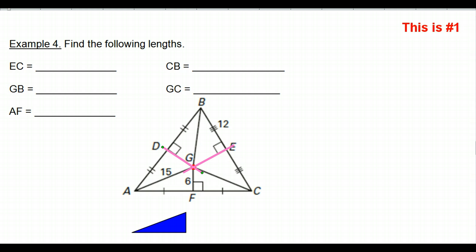Is this pink line DG a perpendicular bisector? Yes it is. It is also perpendicular. It is also a bisector, cutting its side AB in half. What about this last one, FG? Is this a perpendicular bisector? And yes, once again, this is a perpendicular bisector. You see it's perpendicular, and it splits AC in half. Look at the markings. So these pink lines are all perpendicular bisectors.